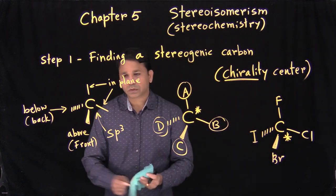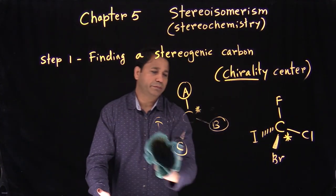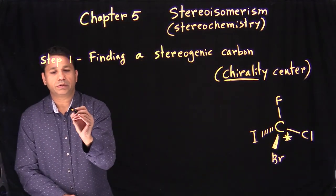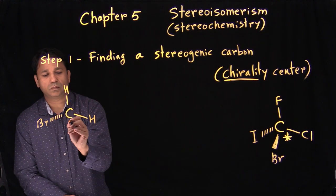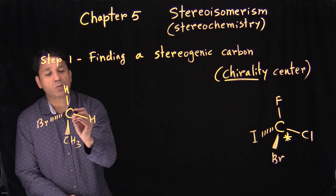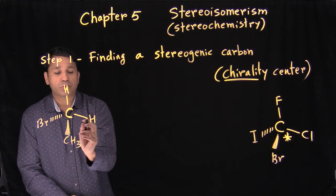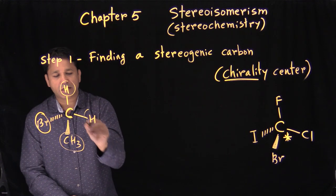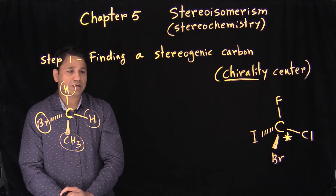Let's try another example. This carbon has four bonds, so four groups are attached. Bromine and CH3 are two different groups, but there are two hydrogens that are the same. We cannot call this carbon stereogenic because two of the groups are identical.